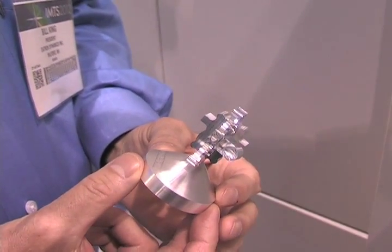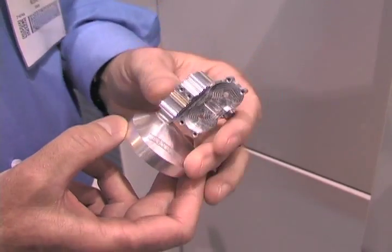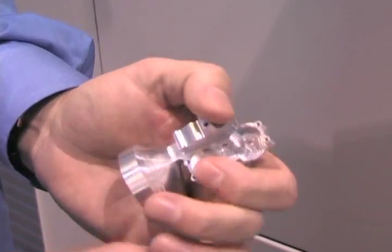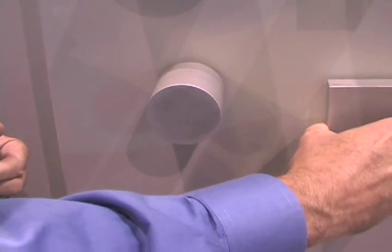Here is the part that we're machining at the show. It's a full five-axis part and to give you an idea of the work volume of the machine, we have these various shapes to show the size.